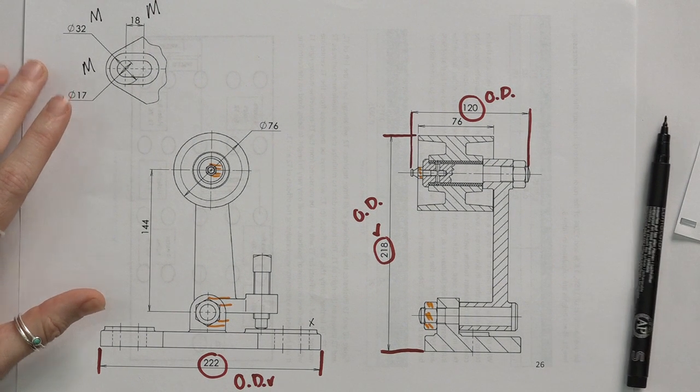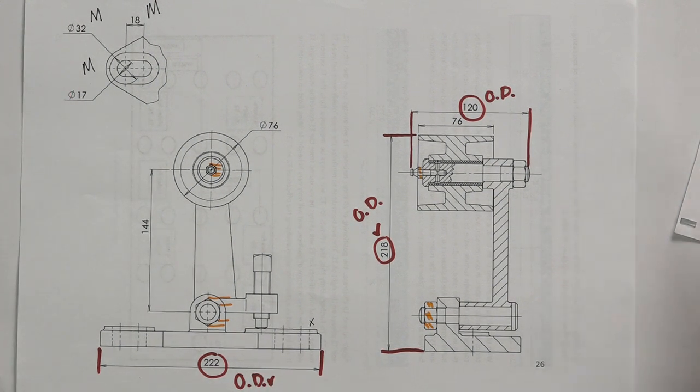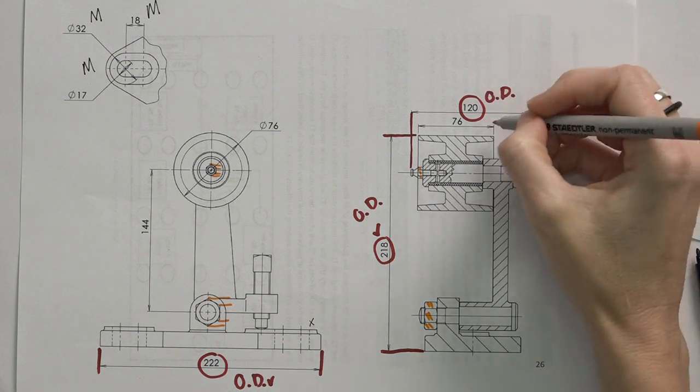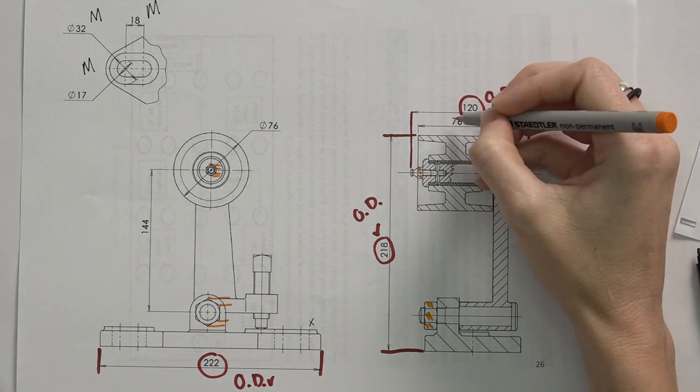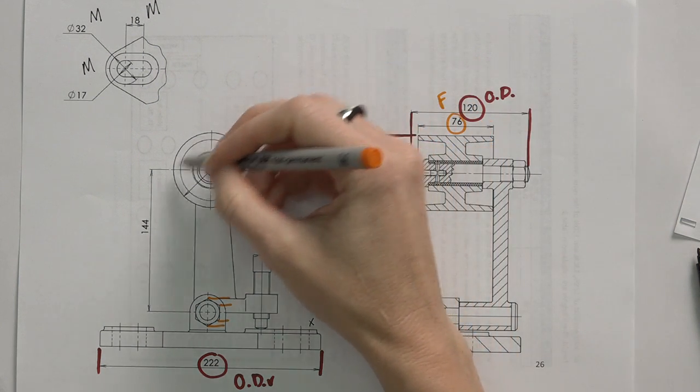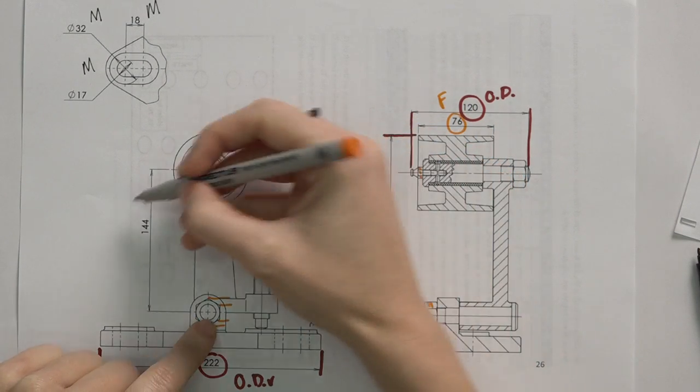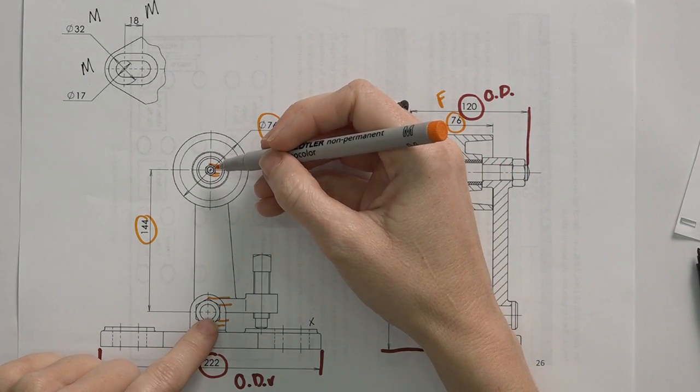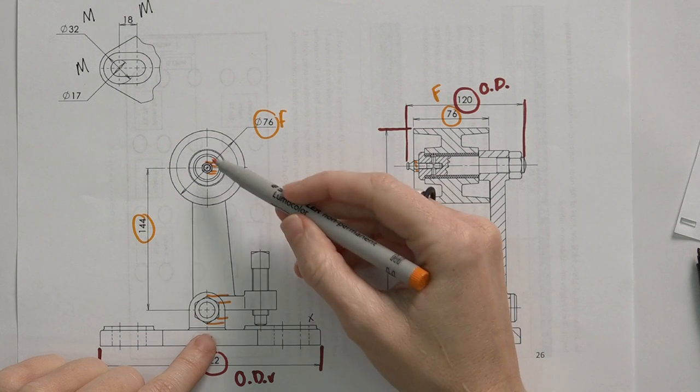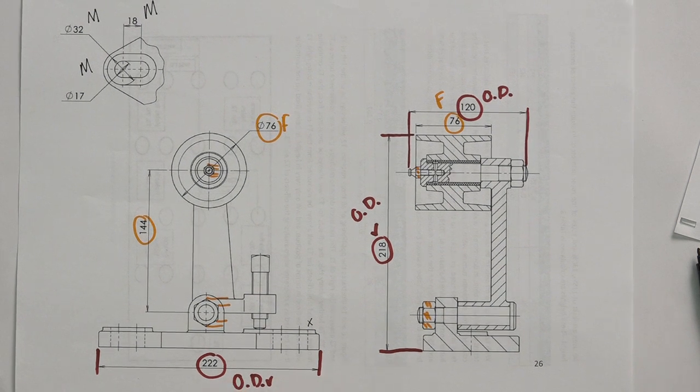The final part that I need is the functional dimension. Now the function of this is a belt tensioner. Important with this belt tensioner is how big is the size of the wheel, so that will be a functional dimension. How large is the diameter of this wheel, and how far are these spaces between these two centre lines, because that's what will determine how this component or assembly is actually used. Okay, so those are the dimensions that we require for this specific drawing.